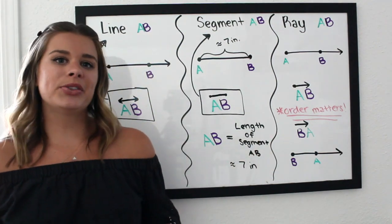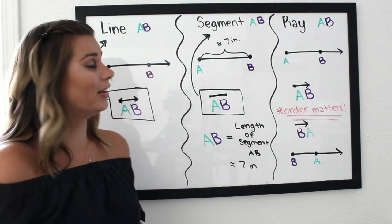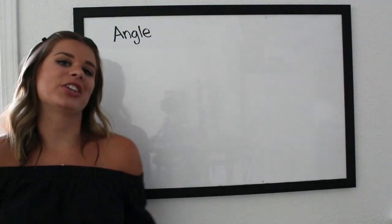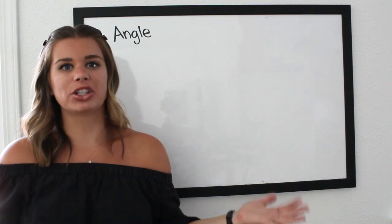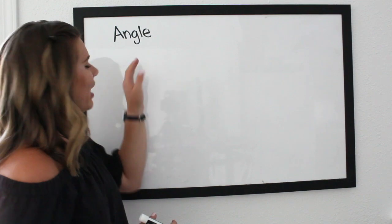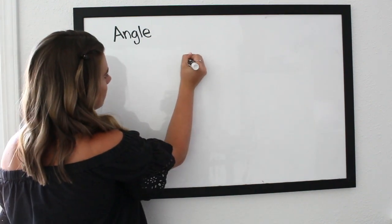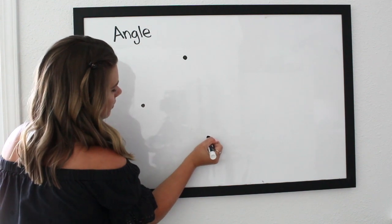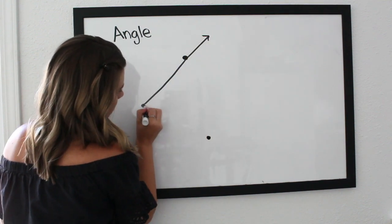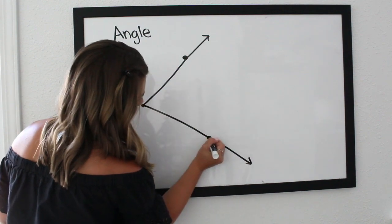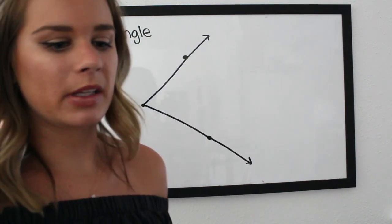Those are our notations for a line, a segment, and a ray. The next notation we'll cover is an angle, and the last one today is a triangle. For angles, we need to name them because a diagram could have many angles all over the place. Let me draw an angle for you.